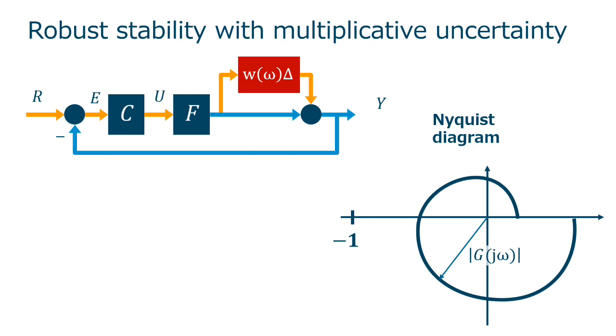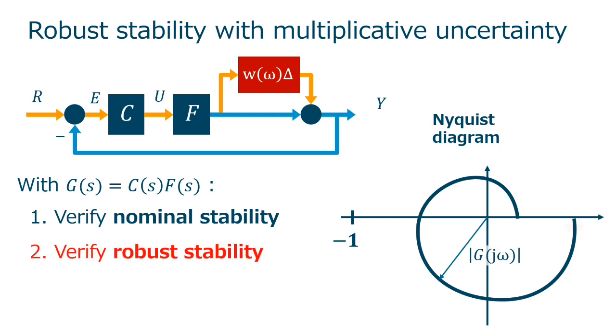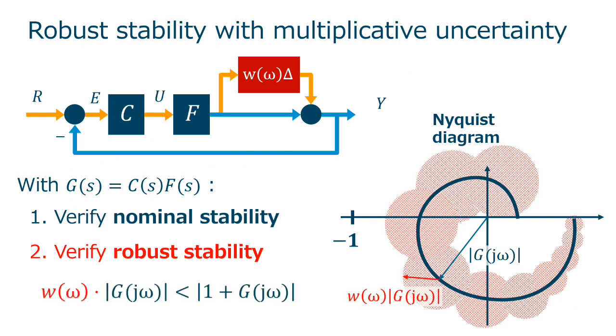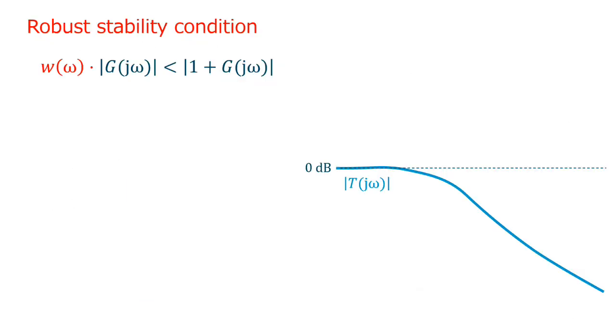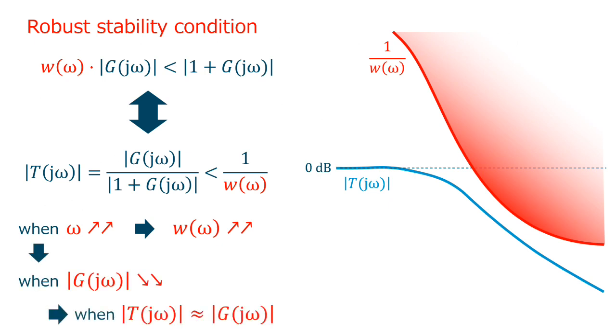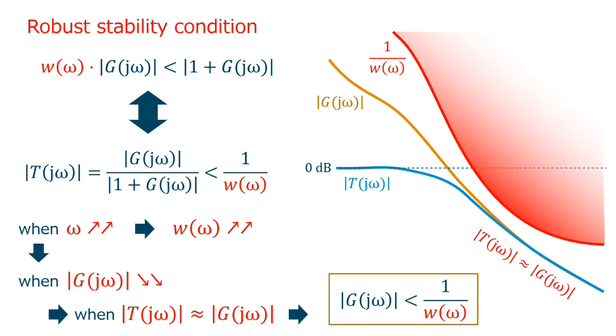We talk about a robust control when our controller is able to keep stability and performance under uncertainty. With the open loop g equal to cf, we first verify nominal stability, and second, we verify the robust stability condition, that verifies that there is no possibility of encircling the point minus one. Taking this robust stability condition, this is equivalent to the condition of the closed loop gain should be less than the inverse of function w. As we know that the uncertainty is larger at higher frequencies, and also the shape of the closed loop t goes as the open loop gain g. Consequently, for achieving robust stability, we need to make g at high frequencies lower than the inverse of w.